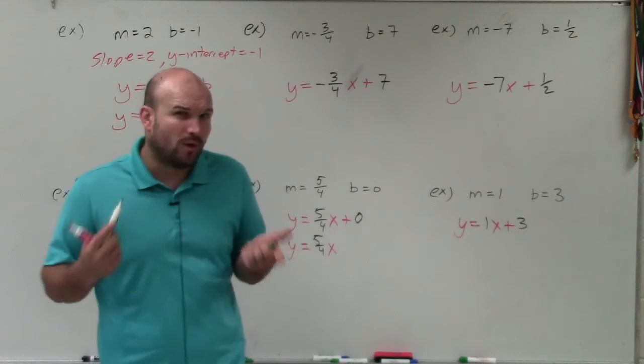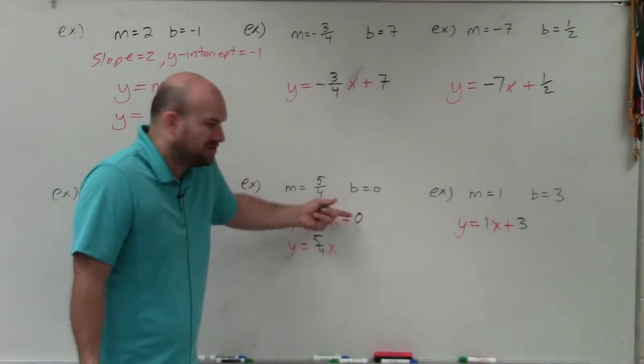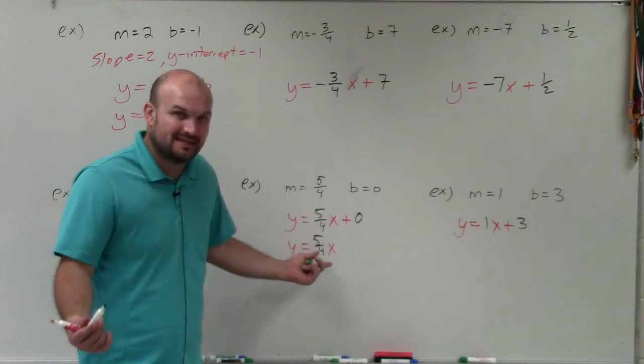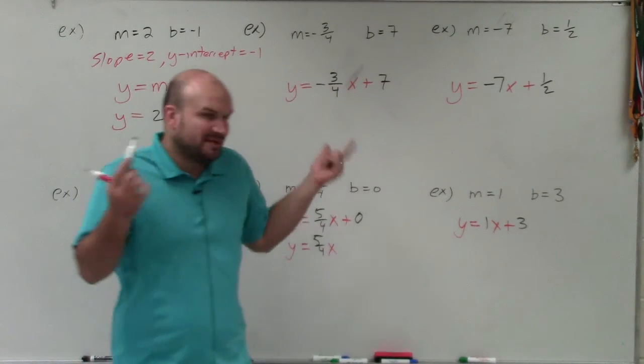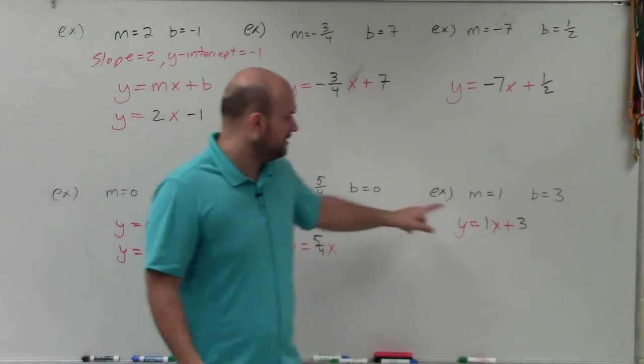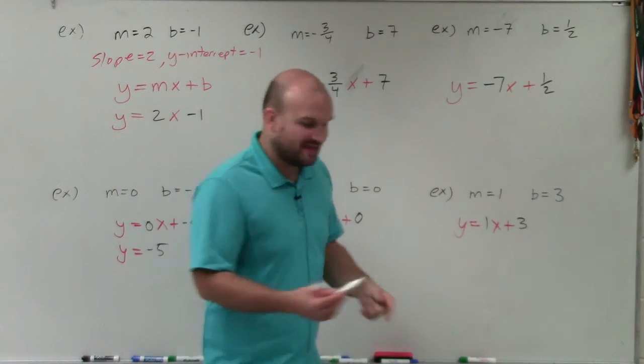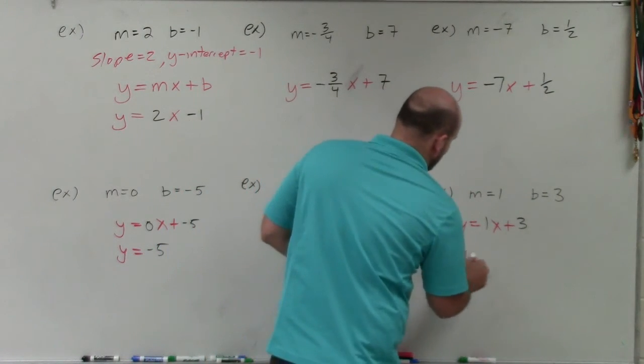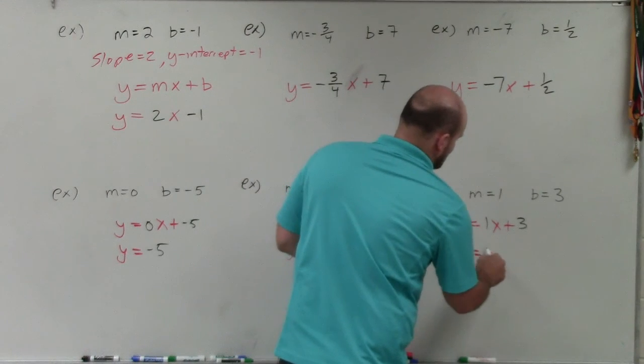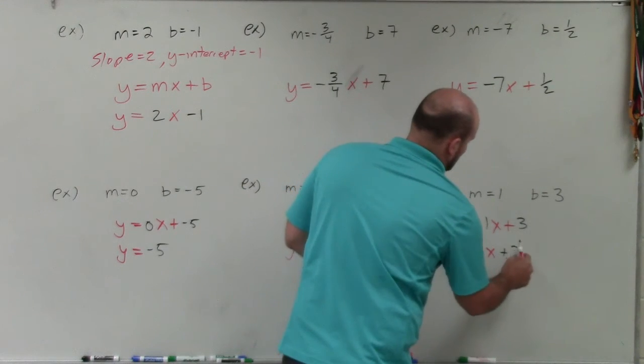However, we usually don't write 1 times x. It's just like adding 0. Adding 0 is not really doing anything to the problem. Because 5 plus 0 is just 5. Well, same thing with multiplying by 1. 1 times 5 is just 5. So we don't really need to represent the 1 there. So we always like to write it, and usually, you'll see in your textbook, it's just y equals x plus 3.